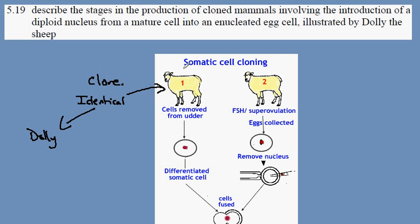We have to obtain the genetic information from the original animal, and this is done by removing a cell. This is a diploid cell with a full set of genetic information. The nucleus contains all the genetic information needed to make this animal.